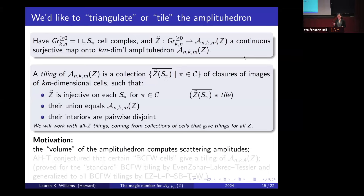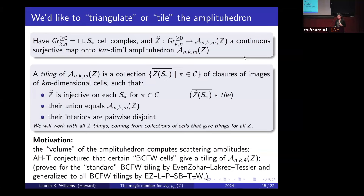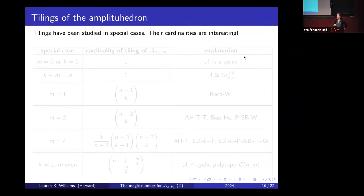The motivation is that the volume of the amplituhedron computes scattering amplitudes. The original paper of Arkani-Hamed and Trnka conjectured that certain BCFW cells give a tiling of the amplituhedron. This has since been proved in the standard case by Even-Zohar, Lakrec, and Tesler, and then generalized for all BCFW tilings together with Melissa, Matteo, and me.